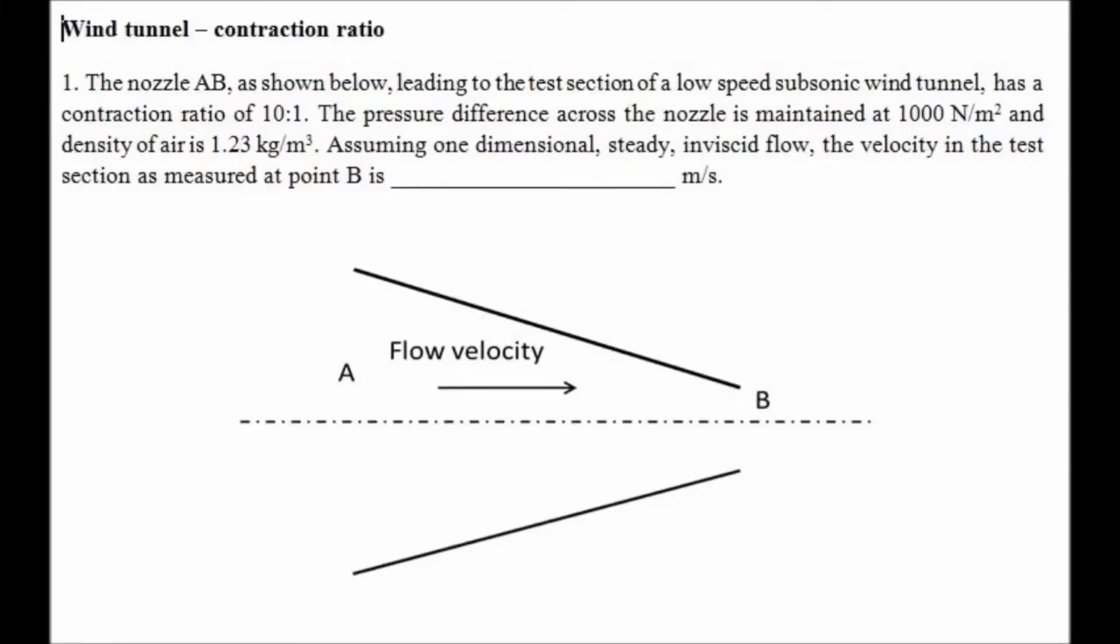Let us see a problem. A nozzle AB as shown below leading to the test section of the low speed subsonic wind tunnel has a contraction ratio of 10 to 1. The pressure difference across the nozzle is maintained at 1000 Newton per meter square and density of the air is 1.23 kg per meter cube. Assuming one dimensional steady inviscid flow, the velocity in the test section as measured at point B is dash meter per second.